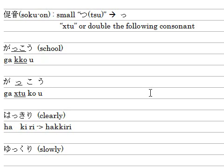Let me type this. が is G-A, then X-T-U, and K-O, and U. がっこう — school.